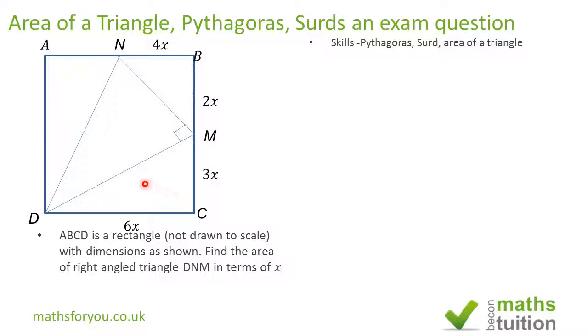If we use Pythagoras here, that will help us find DM. So DM is equal to the square root of 6x squared plus 3x squared. That will reduce to 45x squared, because 36 plus 9 gives 45x squared. And 45 is 9 times 5, so the square root of 45 is the square root of 9 times the square root of 5, and then x squared. The square root of 9 is 3 and the square root of x squared is x, so we end up with DM as 3x root 5.